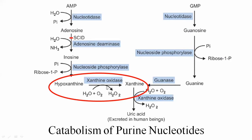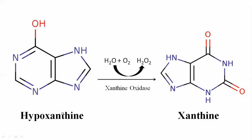Hypoxanthine is converted into xanthine with the help of enzyme xanthine oxidase, and in the presence of water, hydrogen peroxide (H₂O₂) is also formed. Xanthine oxidase causes the addition of an oxygen group to hypoxanthine. The hydrogen peroxide produced is then cleaved by the enzyme catalase into water and oxygen. The difference between hypoxanthine and xanthine is an additional hydroxyl/oxygen group attached.